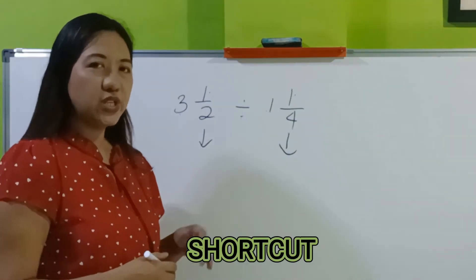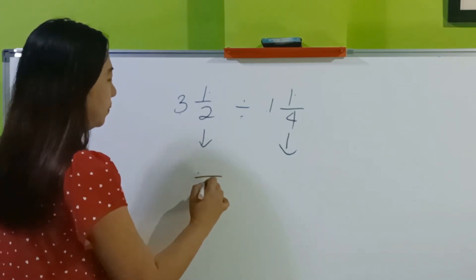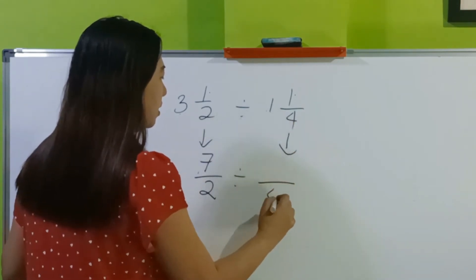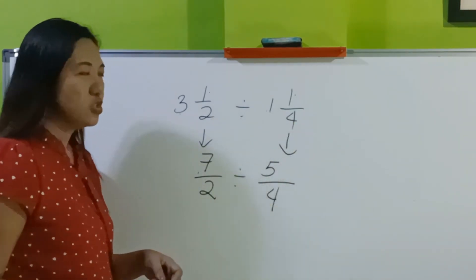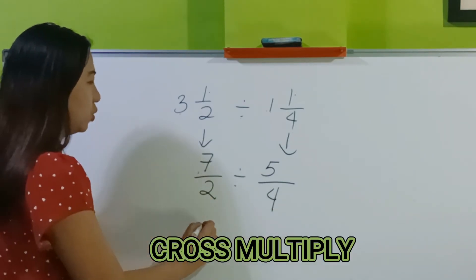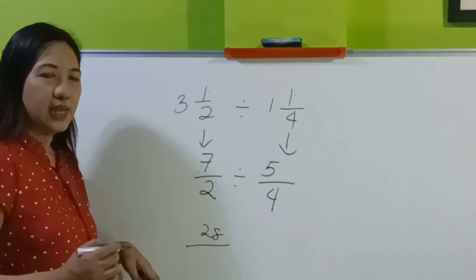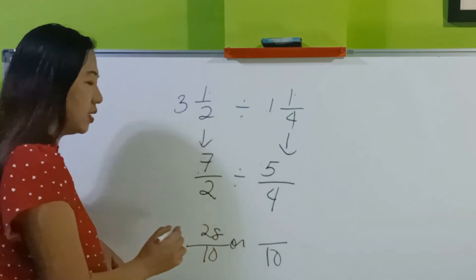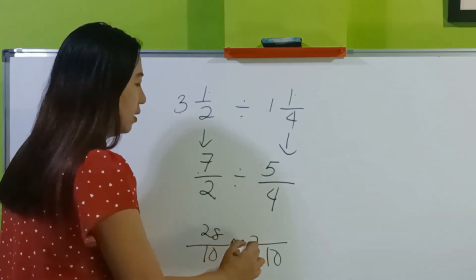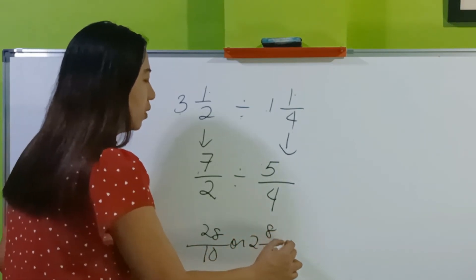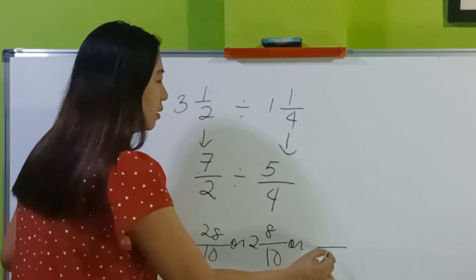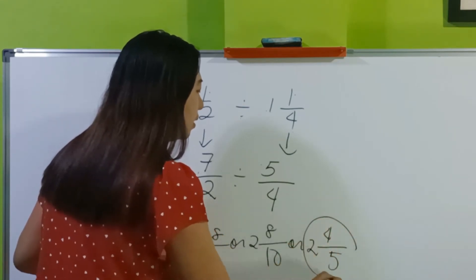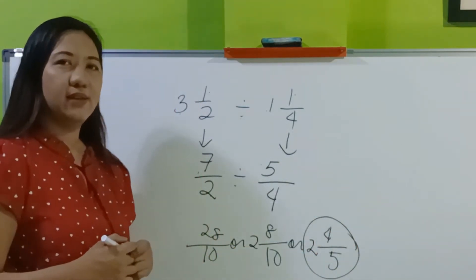Now let's do the shortcut. Change each into its improper form: 7 halves and 5 fourths — same as we did. Now cross multiply: 4 times 7 is 28, 2 times 5 is 10. Simplify — how many tens are there in 28? We have 2, remainder 8 — so 2 and 4 fifths. We have the same final answer.